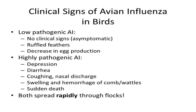The clinical signs of avian influenza in birds varies depending on the pathogenicity of the virus. For low pathogenic viruses, birds may be asymptomatic, meaning they do not show any clinical signs, or they may show signs of mild disease, such as ruffled feathers or decreased egg production. When birds are infected with a highly pathogenic avian influenza, their clinical signs are more severe. Birds may experience depression, diarrhea, coughing, or nasal discharge. It is also possible that there may be swelling and hemorrhage of the wattles or comb, which is when there is an accumulation of fluid and blood under the skin.